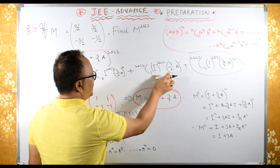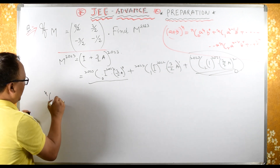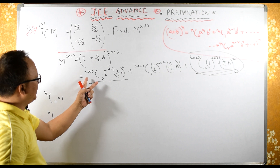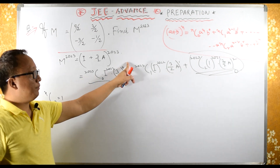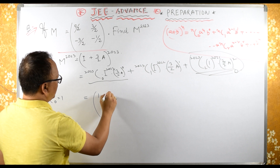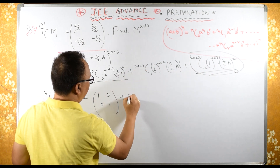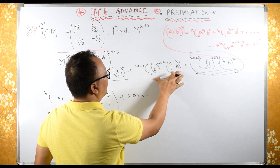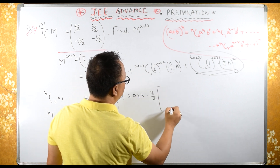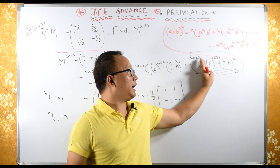Now, N·C0 is 1 and N·C1 is N. Applying this: the first term gives identity matrix (since anything raised to 0 is 1 and I^2023 is I), which is [[1,0],[0,1]]. The second term: 2023·C1 is 2023, identity raised to anything is identity itself so we just write (3/2)·A. So the result is I plus 2023·(3/2)·A.